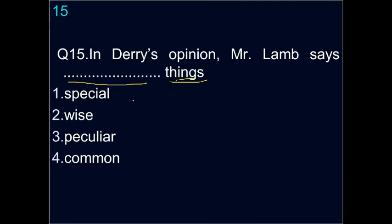Question fifteen: what kind of things does Mr. Lamb talk about? Options are special/wise things, peculiar things, common things, or ordinary things. The correct answer is peculiar — he talks about peculiar things.